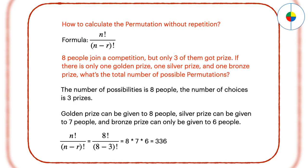Another way to think about it: you can assume everybody got a prize, so the permutation will be 8 factorial. However, there are only 3 prizes. So you need to exclude the other 5 prizes, with permutation of 5 factorial. So the answer will be 336.